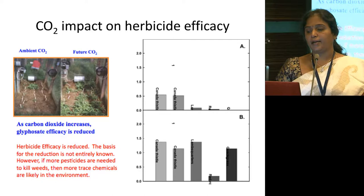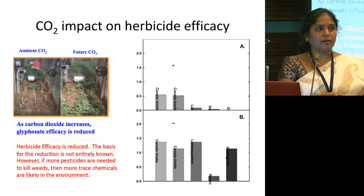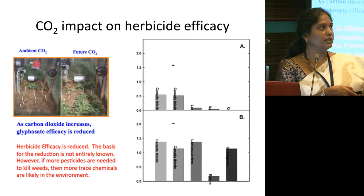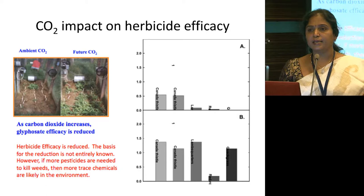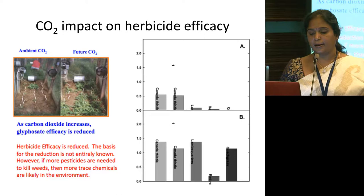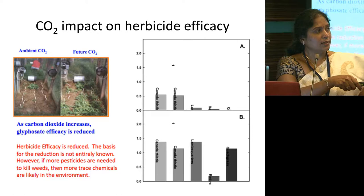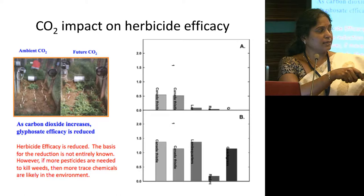One example of CO2 impact on herbicide efficacy: there are two sets shown — one with ambient CO2 and one with future CO2. Weed growth is going to be much higher under future CO2 conditions because herbicide efficacy is reduced, and the basis for this reduction is not entirely known. However, if more pesticides are needed to kill the weeds, then more trace chemicals are likely in the environment. The different weed species shown with ambient versus increased CO2 concentration demonstrate that more weeds are actually present under the higher CO2 scenario.